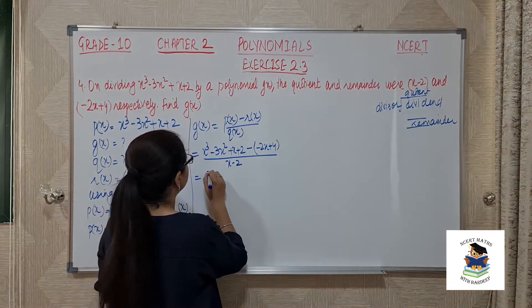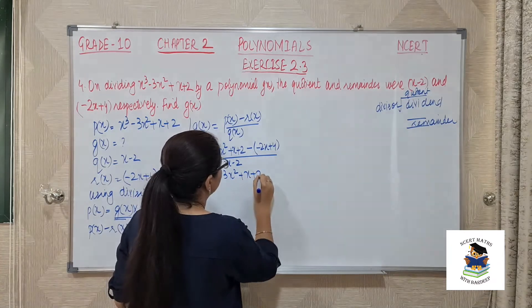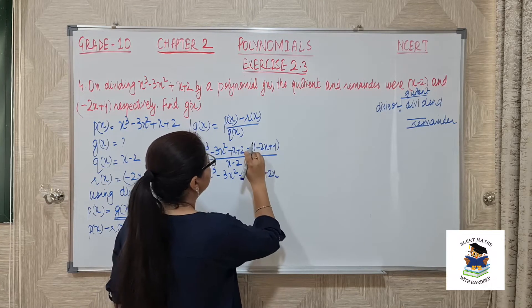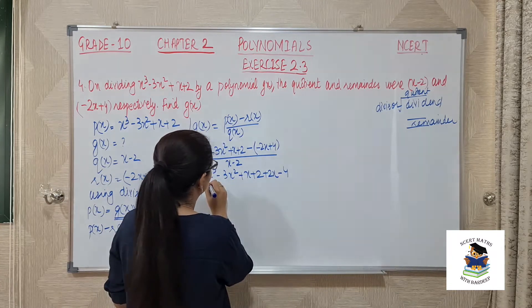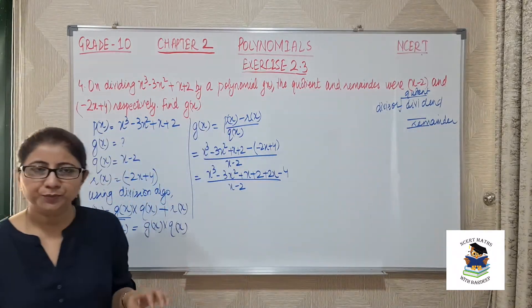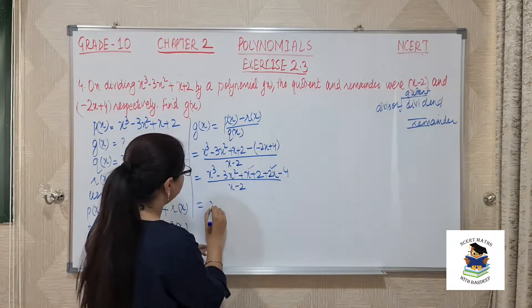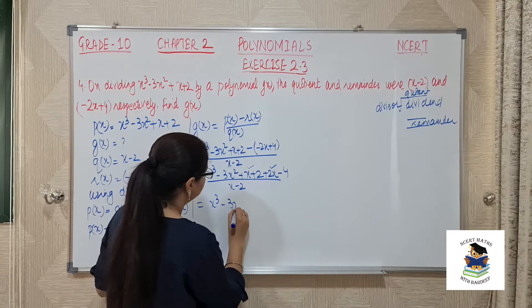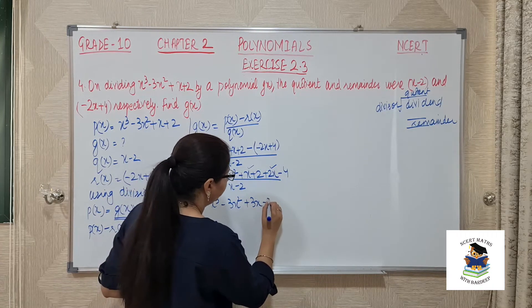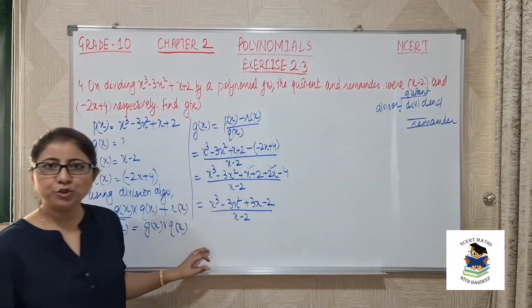Let us open this. This is x cube minus 3x square plus x plus 2. This minus and minus is plus 2x, minus and plus is minus 4 over x minus 2. Now, let us combine like terms. This is x, this is 2x, this will give me 3x, 3x plus 2 minus 4 is minus 2 over x minus 2.